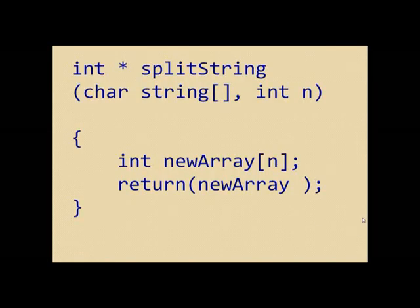The array, newArray, is local to the function and gets destroyed when the function returns. You'd be left with a dangling pointer and using it would invoke undefined behavior.